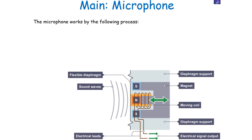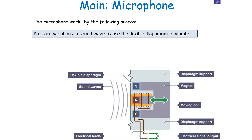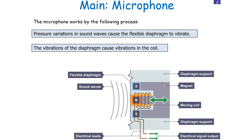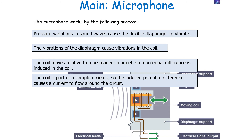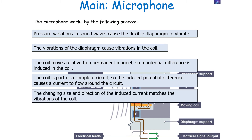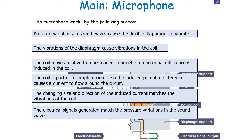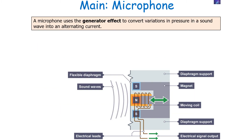A microphone works by a very similar process but in the opposite direction. Pressure variations in sound waves cause the flexible diaphragm of the microphone to vibrate, and the vibrations of the diaphragm cause vibrations in the coil. The coil moves relative to the permanent magnet, inducing a potential difference in the coil because of the change in how many magnetic field lines are being cut through. Since the coil is part of a complete circuit, this induced potential difference causes a current to flow. The changing size and direction of the induced current matches the vibrations of the coil, so the electrical signals generated match the pressure variations in the sound waves.